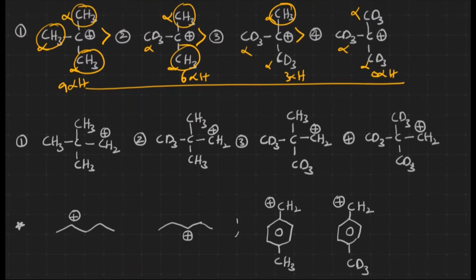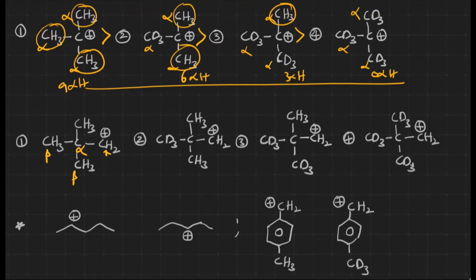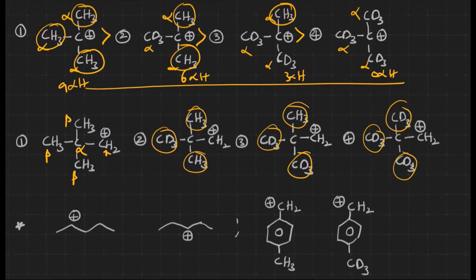Now consider a series where all CH3 groups are replaced one by one with CD3 groups. One might think the first structure is most stable, but that is wrong. The CH3 groups in the first structure are at the beta position, not alpha. Beta hydrogens do not contribute to hyperconjugation, so we must consider the inductive effect. Since CD3 shows a greater plus-I effect than CH3, as the number of CD3 groups increases from left to right, the stability order is: structure 4 > 3 > 2 > 1.